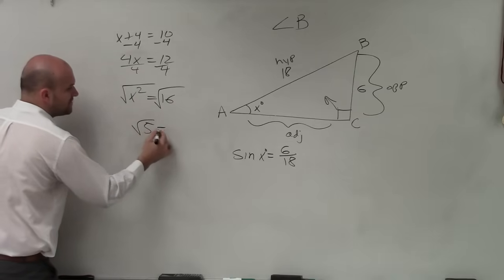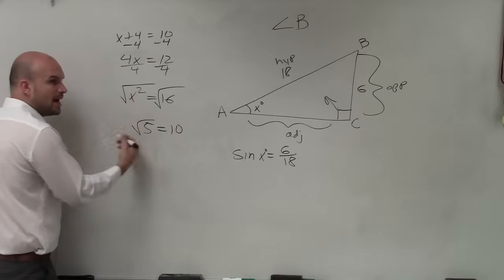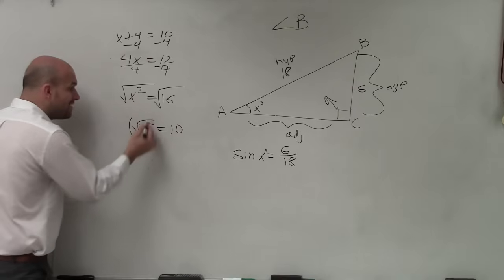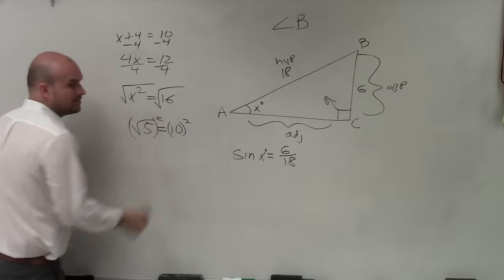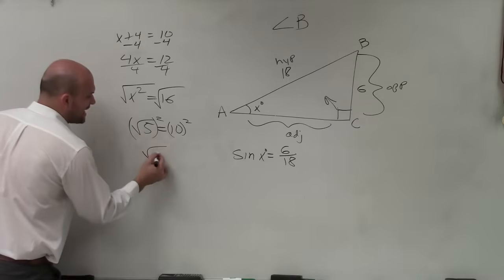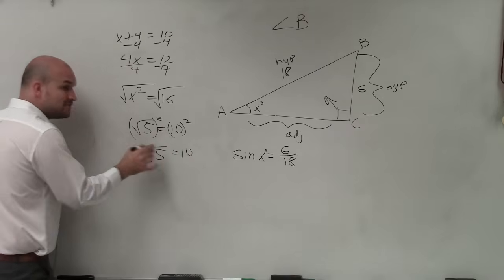So if I had the square root of 5 equal 10, how would I undo the square root of something? Square it. Square it, right? Now, so what I want you guys to understand is the inverse operation of squaring,